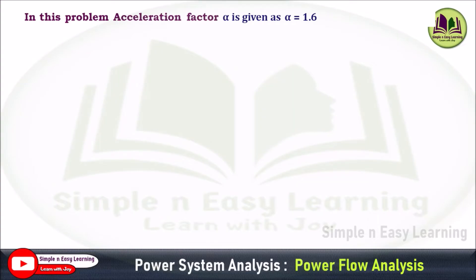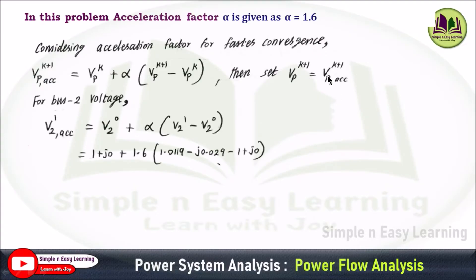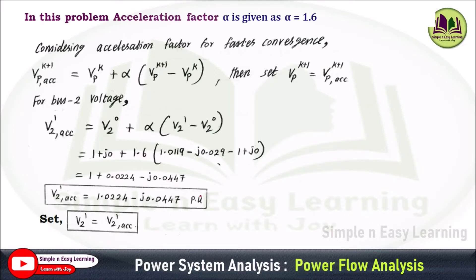An extra piece of information in this problem is the acceleration factor alpha = 1.6, used for faster convergence. Apply the formula: V2_acc¹ = V2⁰ + α × (V2¹ − V2⁰). Substituting V2⁰ from Step 2, α = 1.6, and V2¹ from the previous step, you get the accelerated voltage. Then set V2¹ equal to V2_acc¹ — for all further steps, use this accelerated value as V2¹, not the previous answer.